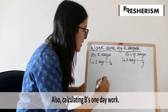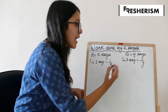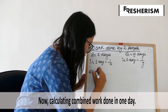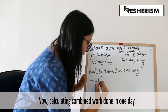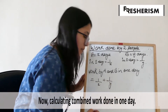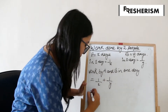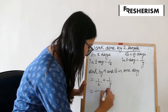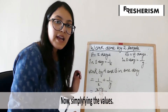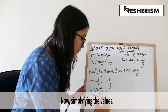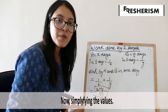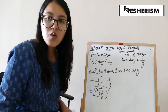Now, to find out the total work done by A and B combined in one day, it will be 1 by x plus 1 by y. If we simplify it further, we get x plus y upon xy. This is the formula for work done by two people in one day.